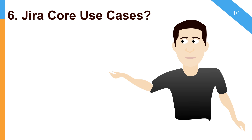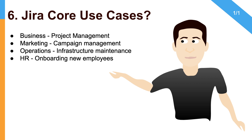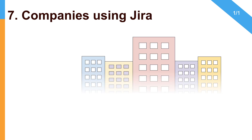So let us go through some of the Jira Core use cases. You can use Jira for any non-technical project — it could be any business-based project where you just want to do some project management. You can use Jira for marketing and running campaigns. People in operations can use Jira Core for infrastructure maintenance. Your HR team can use Jira for onboarding new employees. Your legal team can use Jira Core for document review — creating a process around managing contracts that go through different approval phases. Your finance team can also use Jira for purchase approvals. These are the most common use cases.